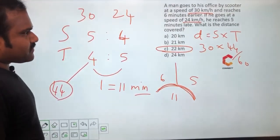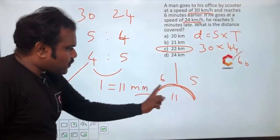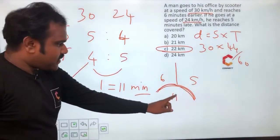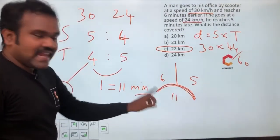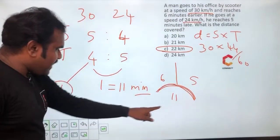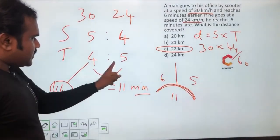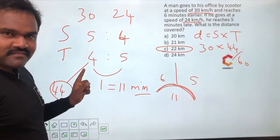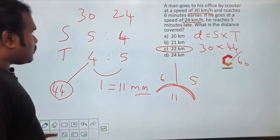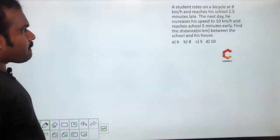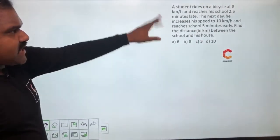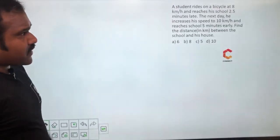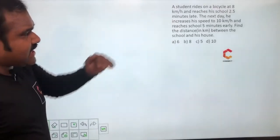The small difference compared to the previous class is that the overall time frame is eleven minutes, which should be compared to the time gap in the ratio. Now one more model of the same type: a student rides a bicycle at 8 km per hour; the next day he increases to 10 km per hour.